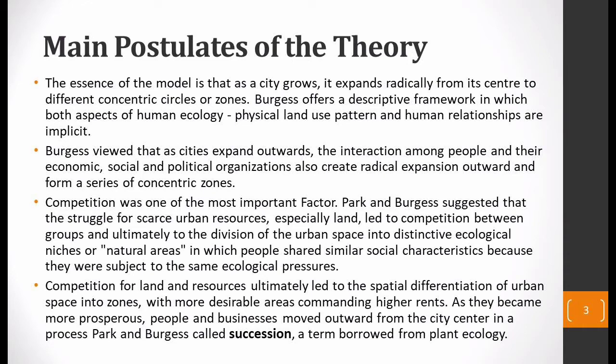When Burgess developed this theory on urban land use, he considered two aspects: first, the physical land use pattern — how land use developed; and second, human relationships — how human interactions and relationships developed. His idea was that the same way the city expands outwards, the economic, social, and political organizations also expand into the concentric zones.